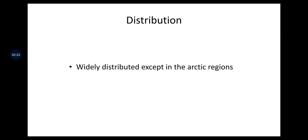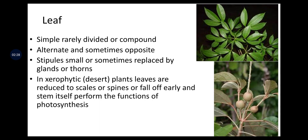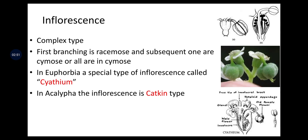Distribution: widely distributed except in Arctic regions. Leaves are simple, rarely divided or compound, alternate and sometimes opposite. Stipules are small or sometimes replaced by glands or thorns. In xerophytic desert plants, leaves are reduced to scales or spines or fall off early. The stem itself performs the function of photosynthesis.